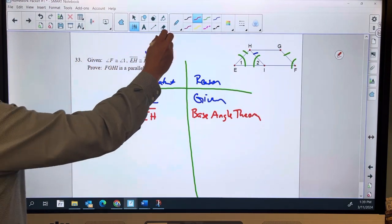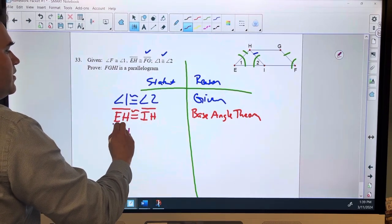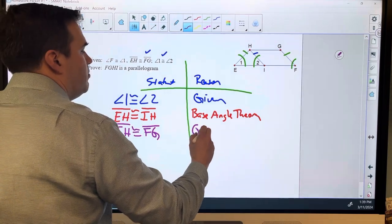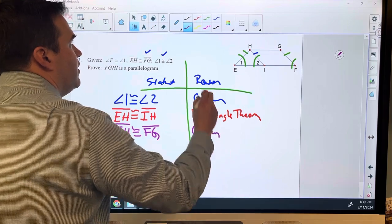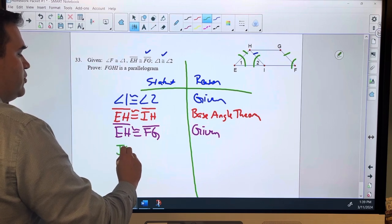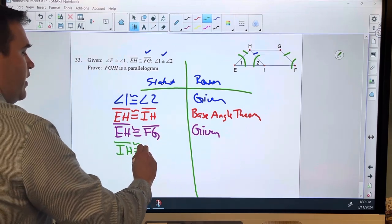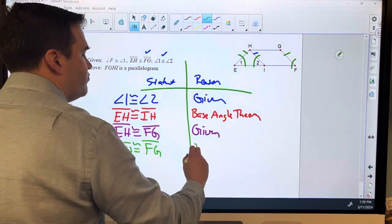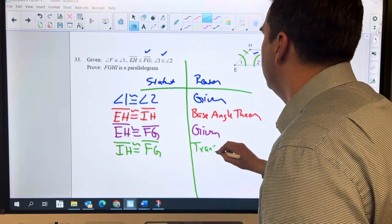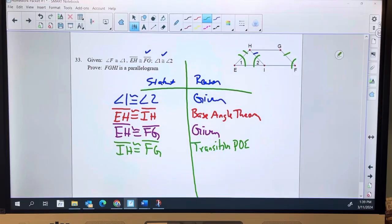And then I can say, furthermore, since EH is congruent to FG, why? Because of the given. I can blend these two statements, and I get that IH is congruent to FG, and that's again the transitive property or substitution.